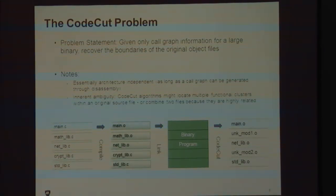It should essentially be architecture-independent — you might be able to do things that were architecture-specific, but it would be great if it was architecture-independent. There's also an inherent ambiguity because the object file boundaries are based on how well the designers segmented the functionality into different C files. If everything's kind of a mismatch, you may not be able to actually recover what you want to.